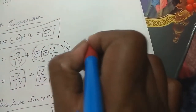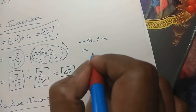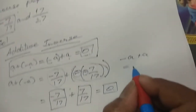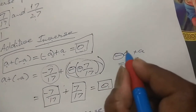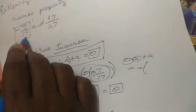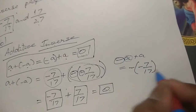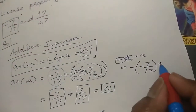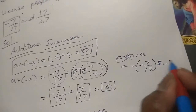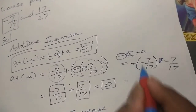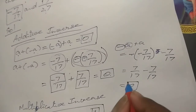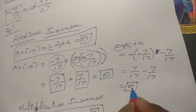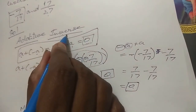Similarly, for 1 by a into a: the reciprocal of minus 7 by 17 is 17 by minus 7, multiplied by minus 7 by 17. Cancelling 17 and minus 7, we get the answer 1. So the multiplicative inverse gives the identity 1. For additive inverse: minus a plus a equals 7 by 17 plus minus 7 by 17 equals 0.